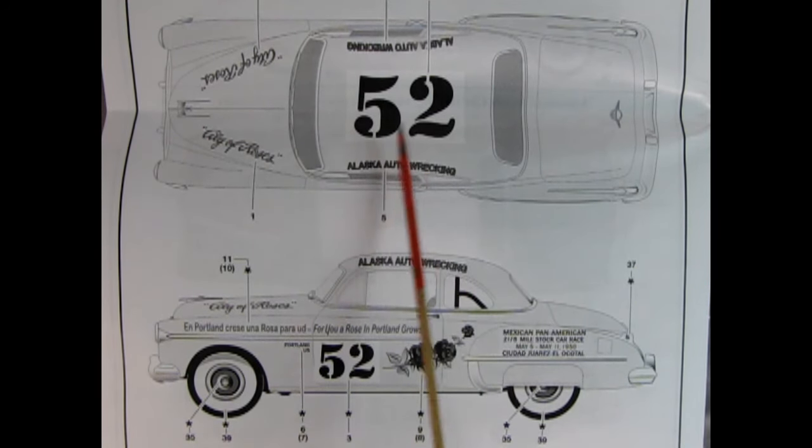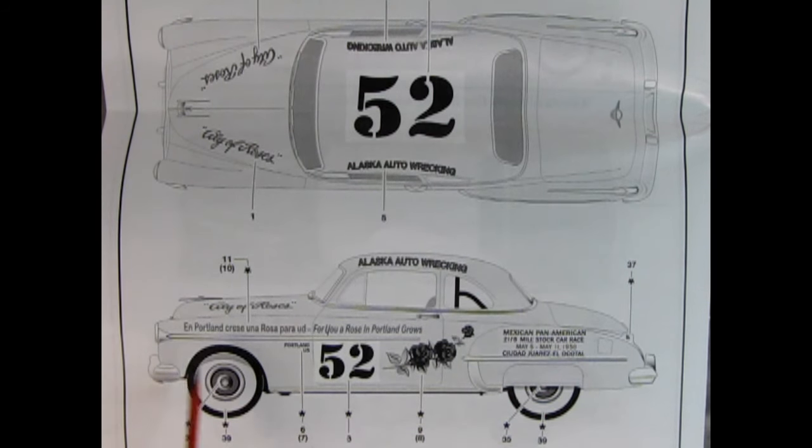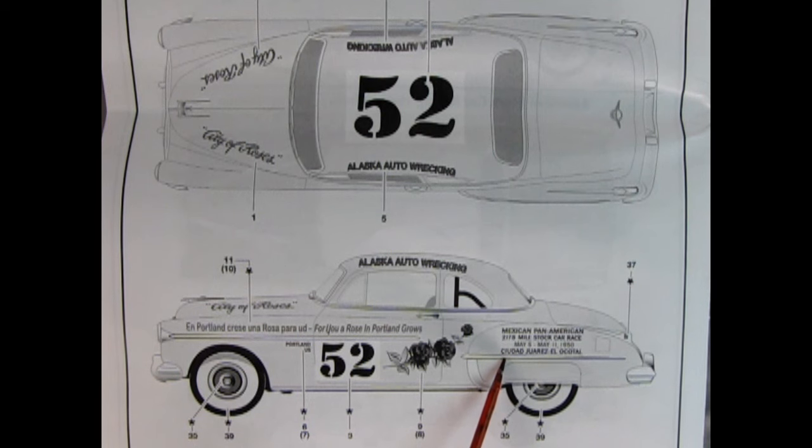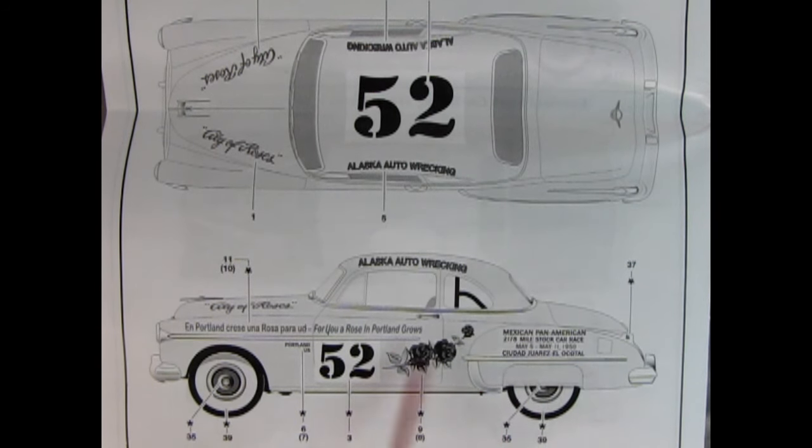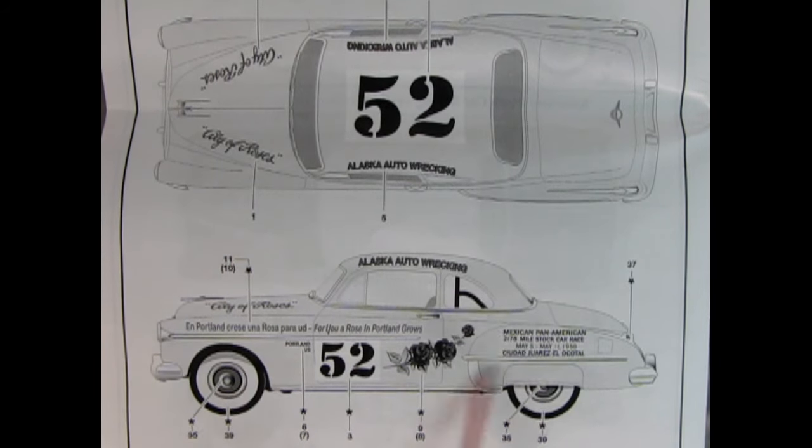And we've got Alaska Auto Wrecking. Number 52. And then down here. And Portland crease una rosa para un for you a rose in Portland grows. It says in English. So there is number 52 with the roses. Mexican Pan American 2,178 miles stock car race. May 5th to May 11th, 1950. So toward the end of the video, I will show you all these decals in color. I can't wait. But now Trevor is going to show you all the cool plastic parts.